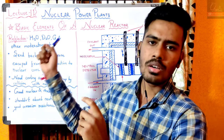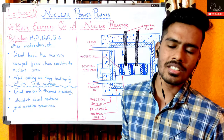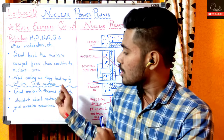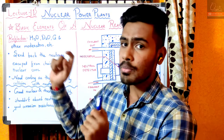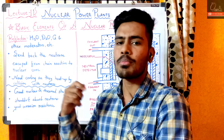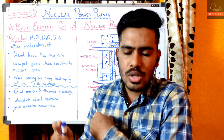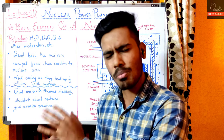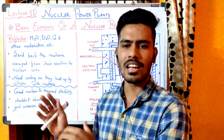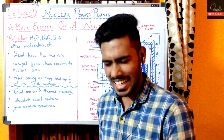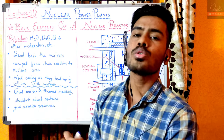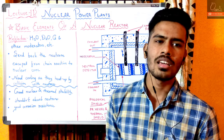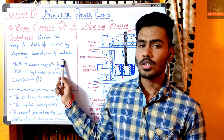अलग material होने पर design इस तरह से की जाती है कि coolant reflector के contact में भी होके जाए। Reflector की ideal qualities: nuclear and thermal stability अच्छी होनी चाहिए, neutrons को absorb किए बिना उन्हें reflect करना चाहिए। Corrosion resistance high होना चाहिए, सस्ता होना चाहिए, easily available होना चाहिए। ये तीन points - सस्ता, easily available, and good corrosion resistance - common हैं moderator, coolant और reflector तीनों में।